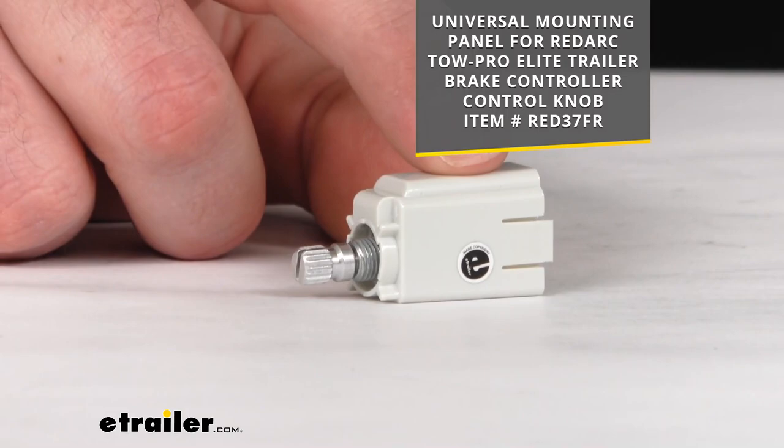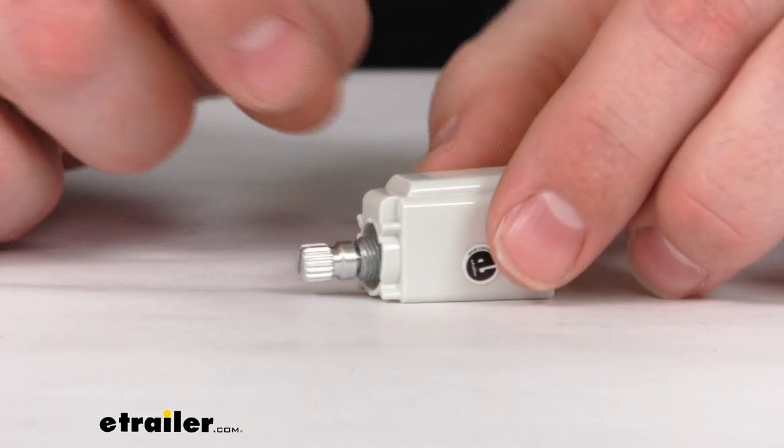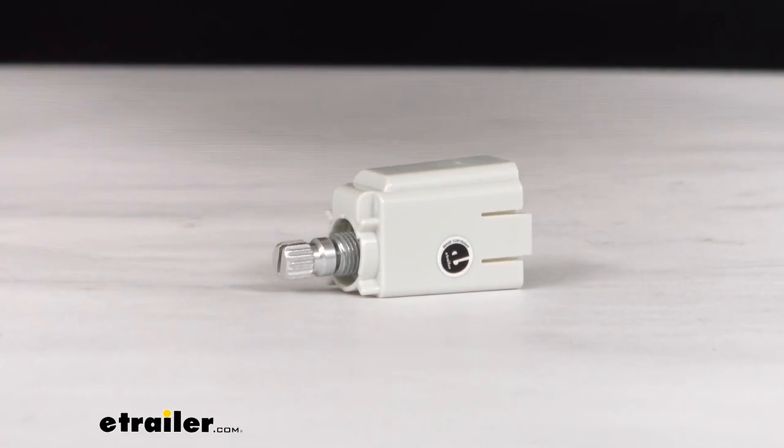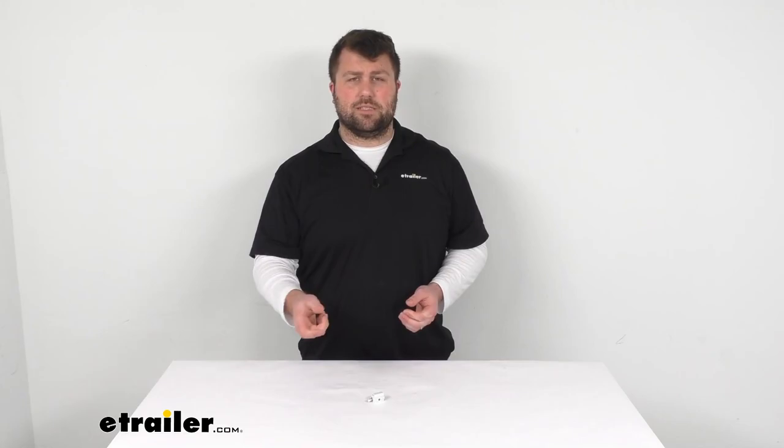So if you are needing a mounting panel for your 3/32nds up to 3/16ths of an inch thick dashboard, this is going to be the piece for you. This will allow you to make sure that your control knob is where you need it to be so you can easily adjust that brake power and make all those fine-tuning adjustments that you need for your brakes on your trailer.